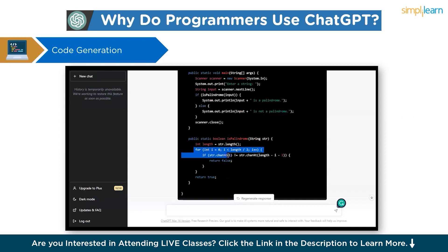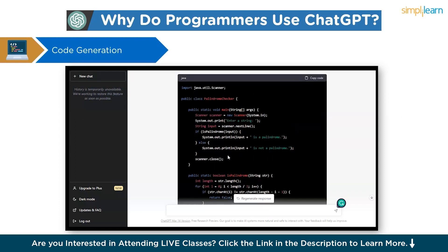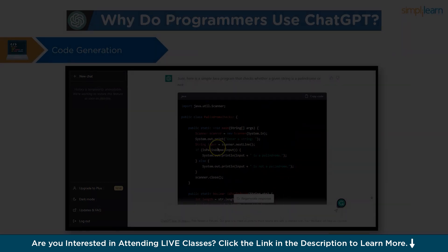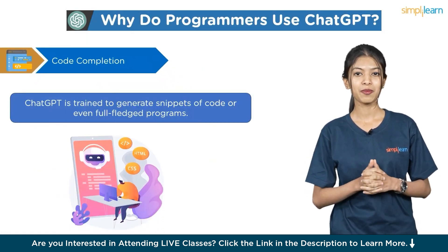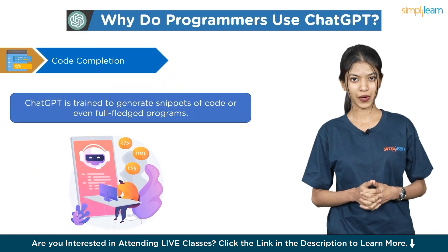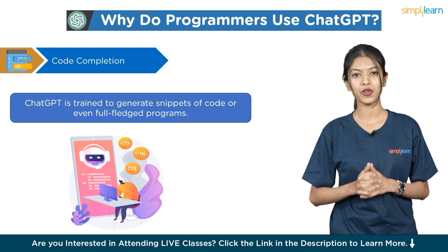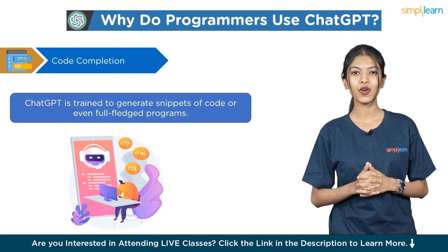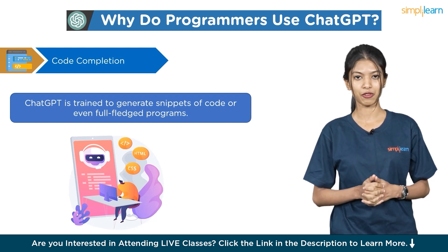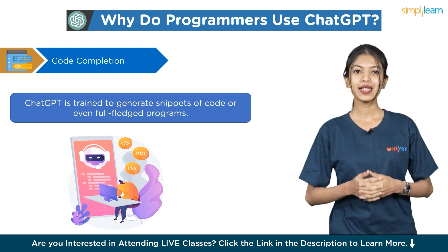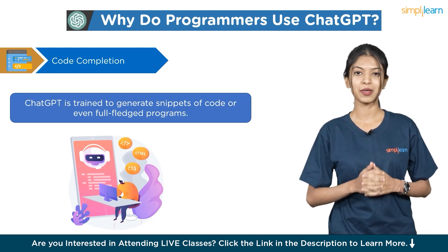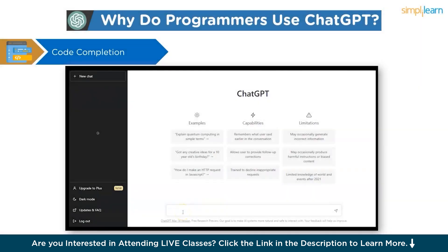Next, we have code completion. ChatGPT is trained to generate snippets of code or even fully fledged programs. It can generate a list of possible code completions depending on the context of the user's incomplete piece of code. By automatically producing the entire code, it helps the developer save time and minimize errors.